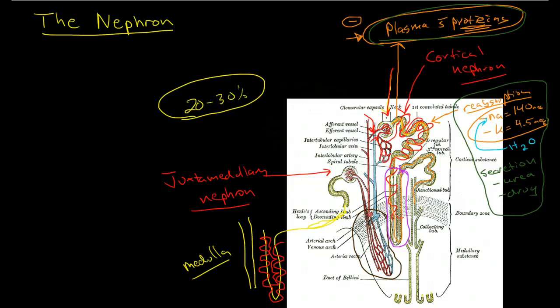So how is the loop of Henle involved with the concentration of urine? Well, what happens is, the loop of Henle is creating a very high concentration of electrolytes around it.